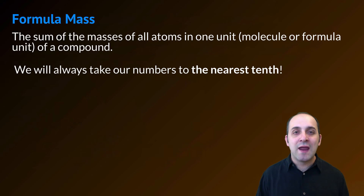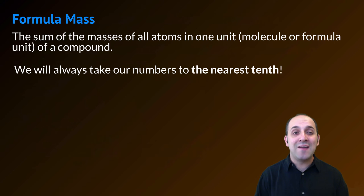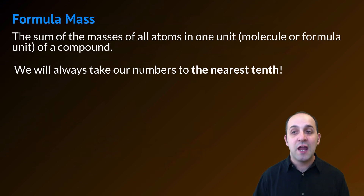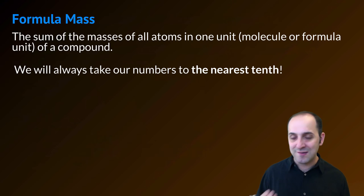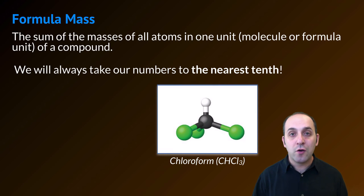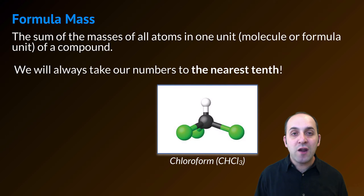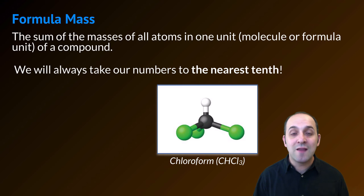Now that we have a handle on that, we can look at the notion of formula mass. Formula mass is simply the sum of all the masses of all of the atoms in one unit — either the molecule or the formula unit — of a compound. For the purpose of all the math involving formulas, we're going to take our numbers to the nearest tenth. Here's a compound called chloroform, with formula CHCl₃. If we wanted to figure out the formula mass of chloroform, we can do it by summing the masses of all of the atoms in one molecule.